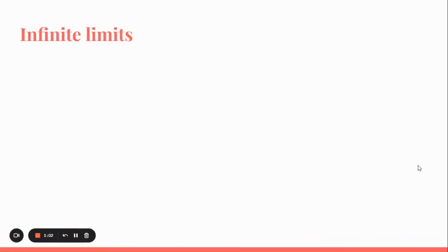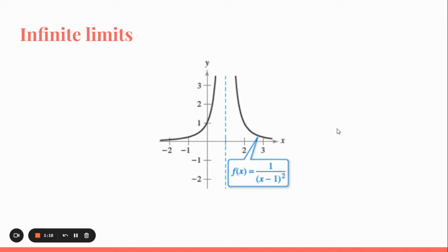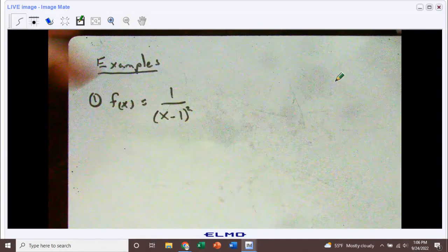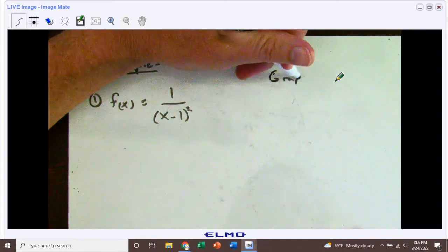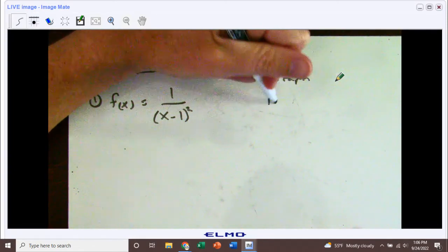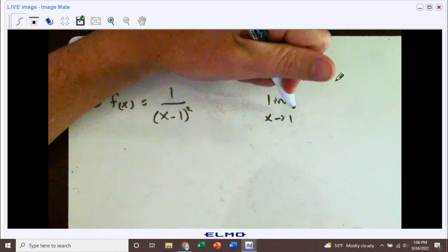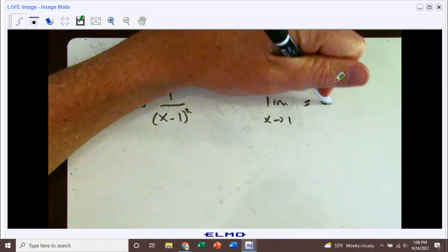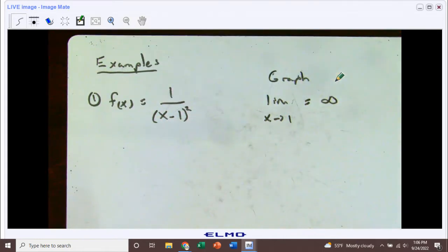Let's first take a look at the graph. You can go ahead and do a rough sketch of this. We can clearly see that at x equals 1, we have an asymptote. It's very simple to look at the graph and tell that from the left-hand side we are approaching positive infinity, and from the right-hand side we're also approaching positive infinity. So the limit as x is approaching 1 equals positive infinity.